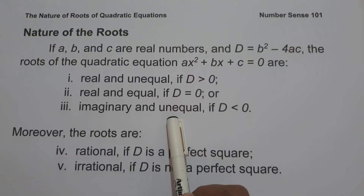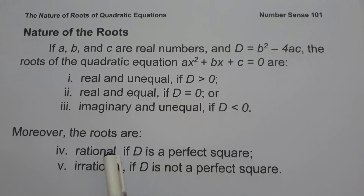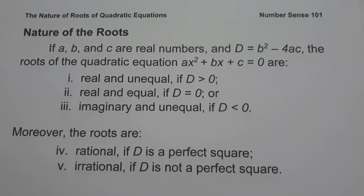Moreover, if the discriminant is a perfect square, the roots are rational. If d is not a perfect square, the roots of the quadratic equation are irrational. So these are the basic concepts that you need to remember to identify the nature of roots of quadratic equations.